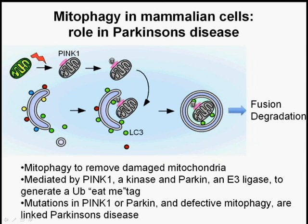A second role of mitophagy involves the removal of damaged, depolarized mitochondria. This process depends on two proteins, PINK1, an outer mitochondrial membrane protein, and PARKIN, an E3 ligase which ubiquitinates so far unidentified proteins on mitochondria. These ubiquitinated mitochondria are then targeted to the autophagosome and degraded. Mutations in PINK1 and PARKIN are linked to forms of Parkinson's disease. Thus, a greater understanding of mitophagy has the potential to increase our knowledge about the cause of the disease and bring us closer to effective treatments.